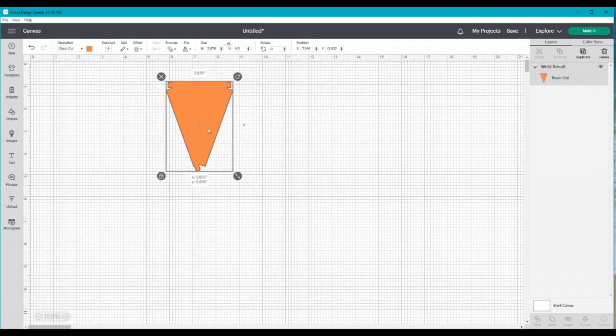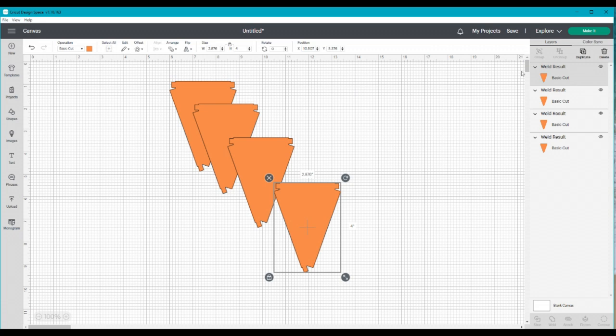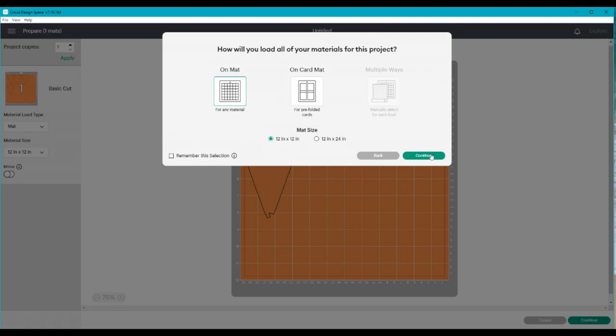So if we're going to use this now and make this tray you may choose to make more than one at a time. If you want to do that it's really easy. Just go over to the right here and click duplicate. You now have two. You can hit again or as many times as you would like. I'm going to choose four at this point and then I'm going to choose the green make it button.